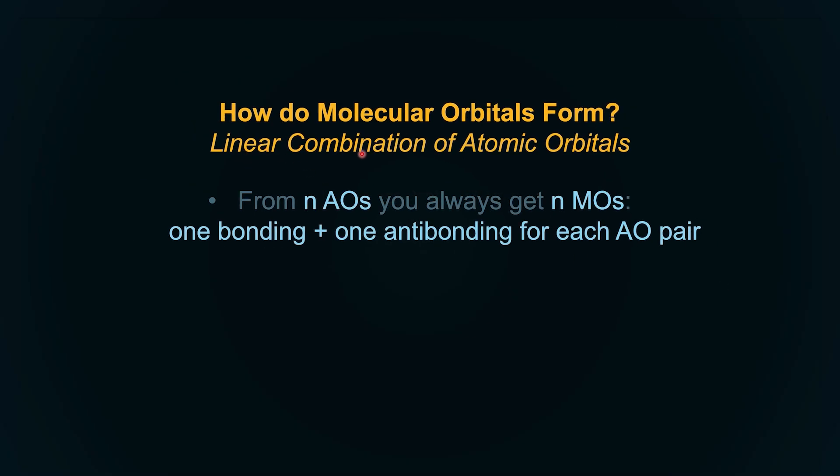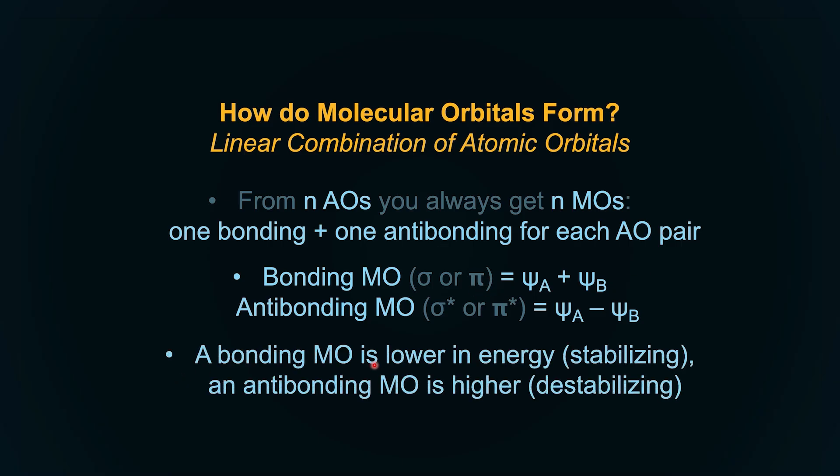How do molecular orbitals form? Well, through linear combination of atomic orbitals. You remember that atomic orbitals are nothing but wave functions of probability of finding an electron. From N atomic orbitals, you get N molecular orbitals, one bonding and one antibonding for each atomic orbital pair. Bonding is nothing but constructive interference of the wave functions. Antibonding is nothing but destructive interference of the wave functions. Antibonding is represented with a star. Sigma is head-on. Pi is not head-on or non-coaxial bonding.